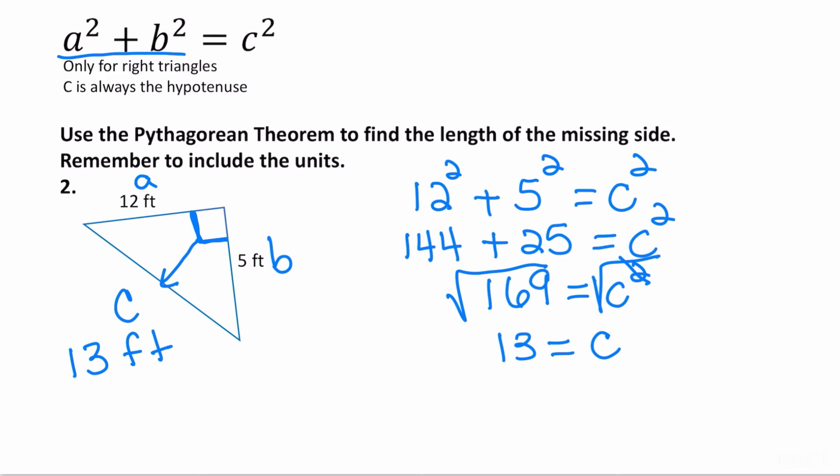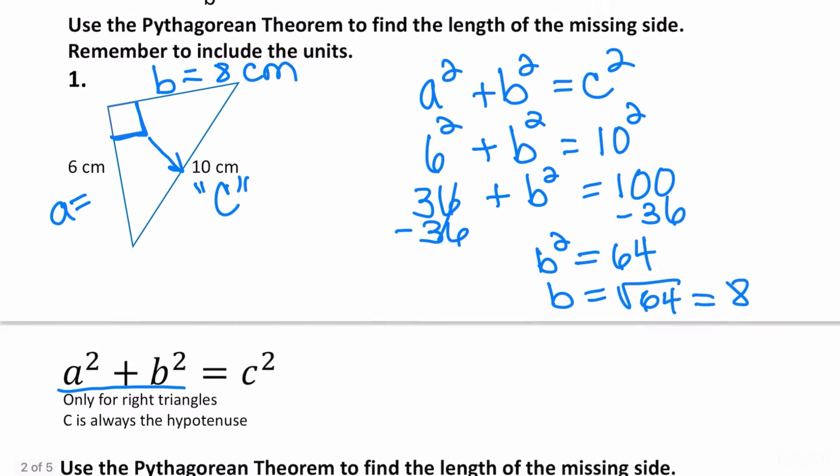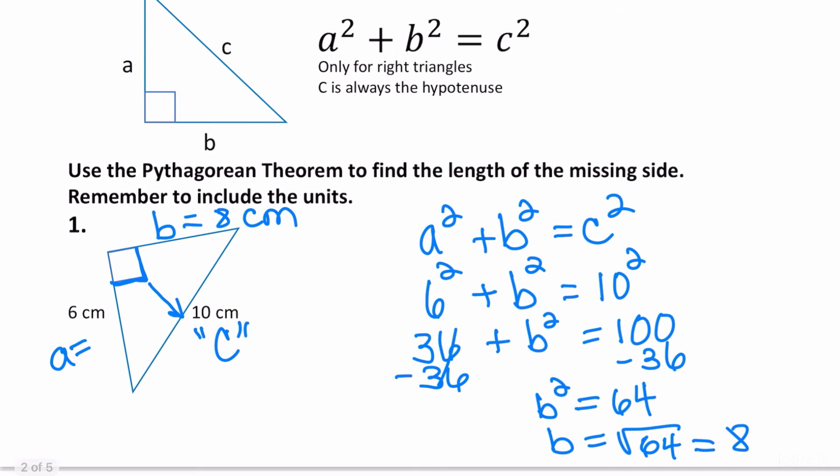This by the way is what's called a Pythagorean triple. A Pythagorean triple is basically just a shortcut. It always works and one of those triples is the 5, 12, 13 triangle. In the previous example that we did, there's another triple: 6, 8, 10. That means that if you ever get a right triangle and you know one length is 6, the other leg is 8, the hypotenuse has to be 10.